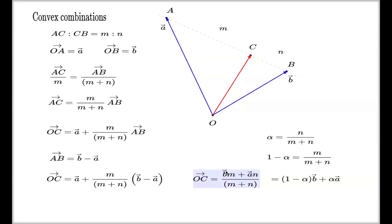So in fact, the factor next to the B is (1 - alpha), and the factor next to the A is alpha. And combinations like this are normally called convex combinations. That's the reason for the title.